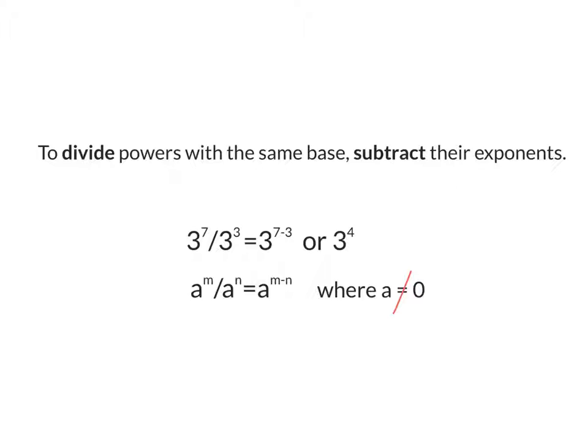To divide powers with the same base, subtract their exponents. For example, 3 to the power of 7 divided by 3 to the power of 3 — I'm going to subtract 7 and 3, and that will leave me with 3 to the power of 4. It works with variables as well: a to the power of m divided by a to the power of n equals a to the power of m minus n, where a cannot equal 0 because then it will be undefined.